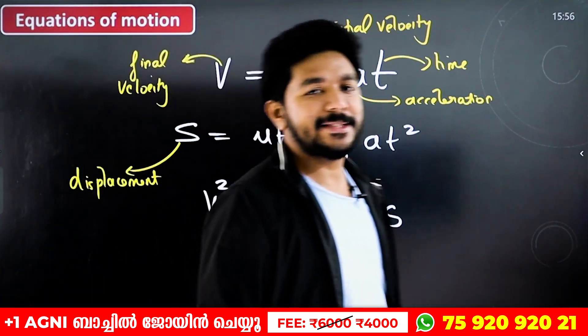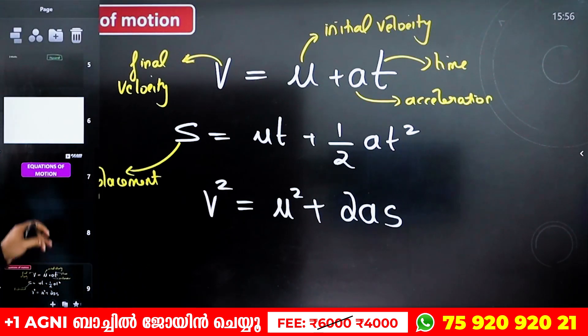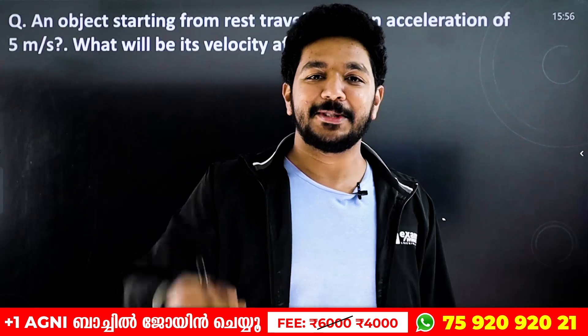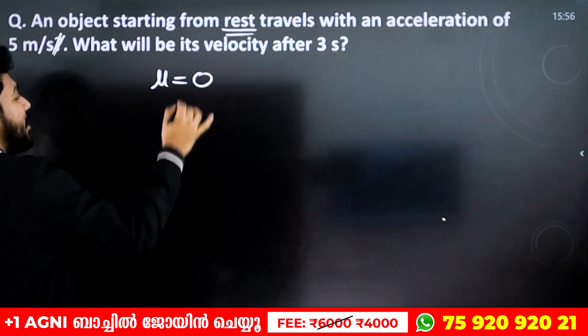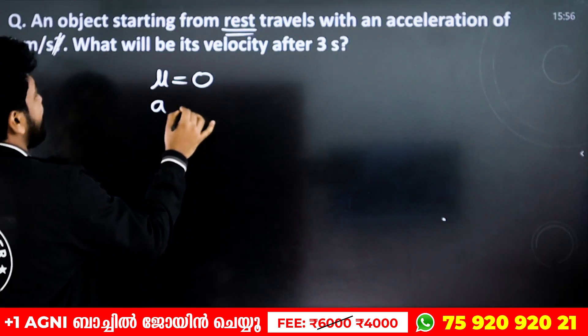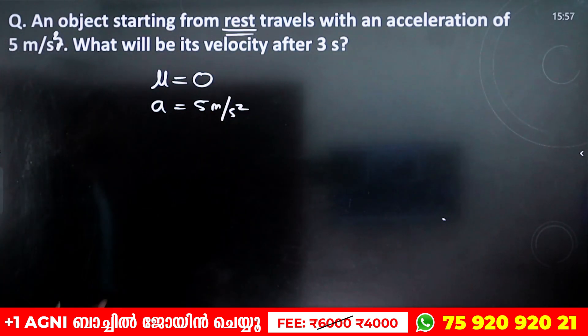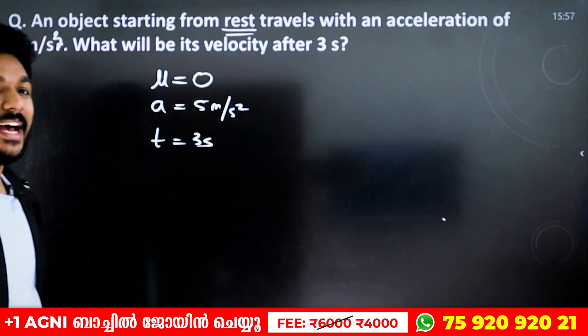If you want to learn the equations, you can learn the whole set. V equals U plus AT, S equals UT plus half AT squared, and V squared equals U squared plus 2AS. These are the equations of motion. Now, let's look at a problem: An object starting from rest travels with an acceleration of 5 meters per second squared. What will be its velocity after 3 seconds?